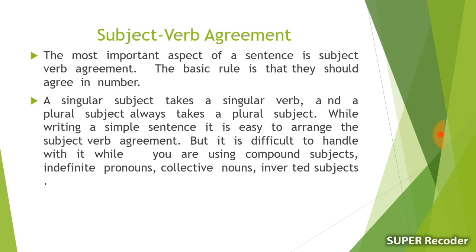Next, subject-verb agreement. The most important aspect of a sentence is subject-verb agreement. The basic rule is that the subject and verb should agree in number. For example: 'Fatima goes to market,' 'I go to market,' 'They go to market,' 'She goes.' When the subject is singular, the verb is singular. When the subject is plural, the verb is also plural.